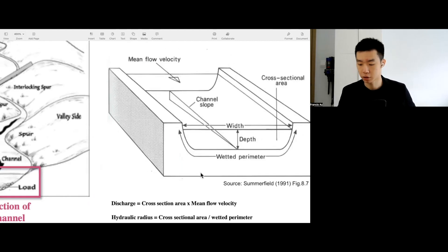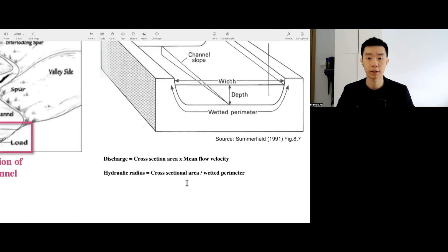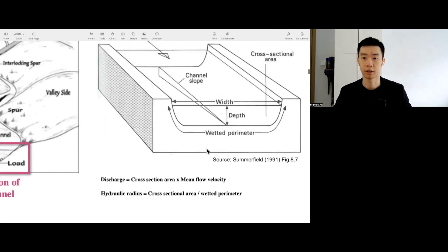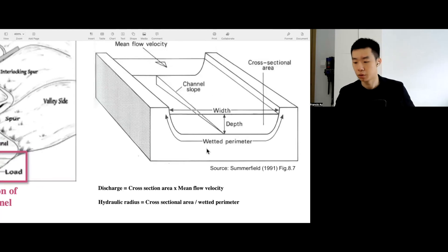So what is discharge? Discharge is the cross-sectional area times the mean velocity, or average velocity. Let's take a look. The cross-sectional area is the depth times the average depth times the width.